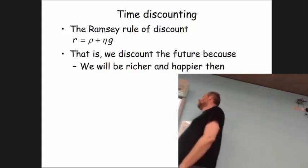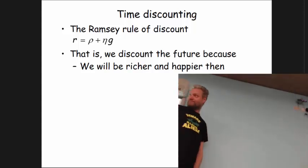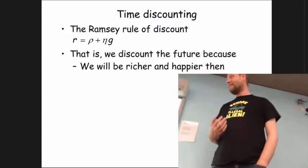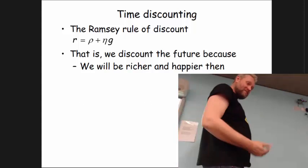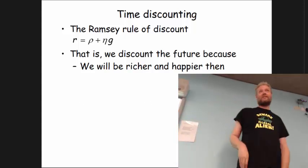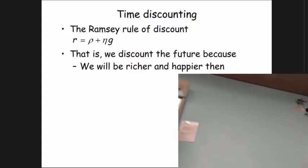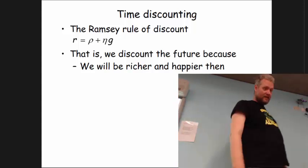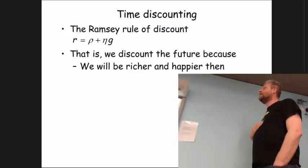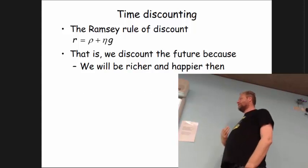Those three components are: rho, the pure rate of time preference or the utility discount rate; g, the growth rate of things that you care about, let's say consumption; and eta, the curvature of the utility function. Phrased differently, there are three reasons why we discount the future.